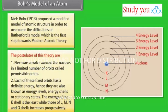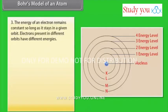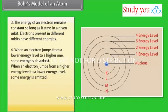The energy of the K shell is the least, while those of L, M, N and O shells increases progressively. The energy of an electron remains constant so long as it stays in a given orbit. Electrons present in different orbits have different energies. When an electron jumps from a lower energy level to a higher one, some energy is absorbed. When an electron jumps from a higher energy level to a lower energy level, some energy is emitted.